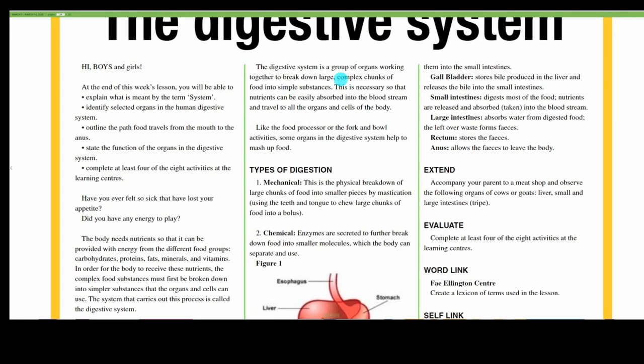The digestive system is a group of organs working together to break down large complex chunks of food into simple substances. This is necessary so that nutrients can be easily absorbed into the bloodstream and travel to all the organs and cells of the body. Like the food processor or fork and bowl activities, some organs in the digestive system help to mash up food.